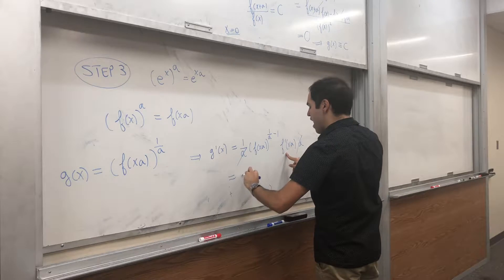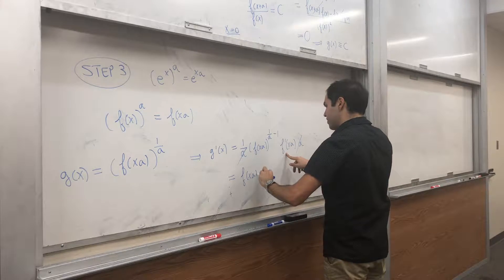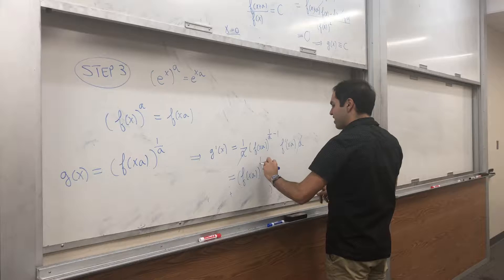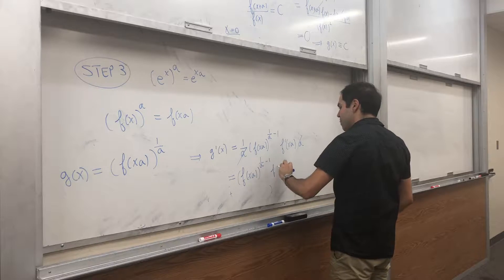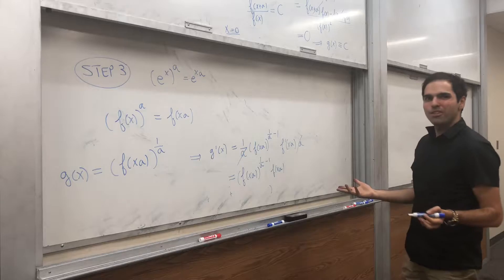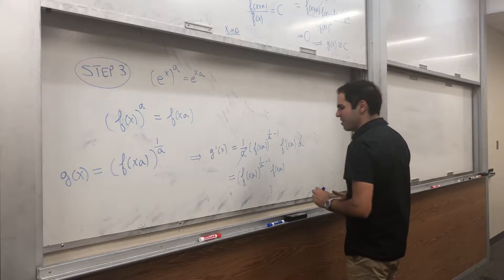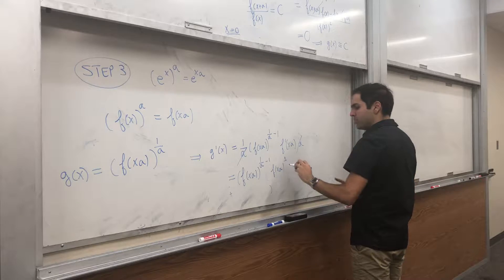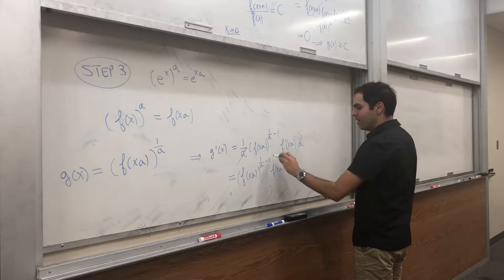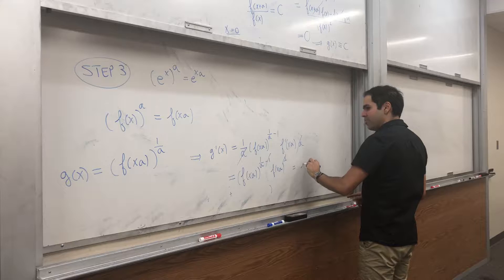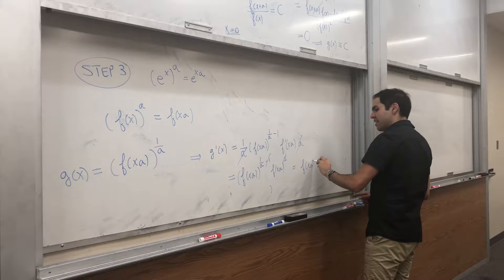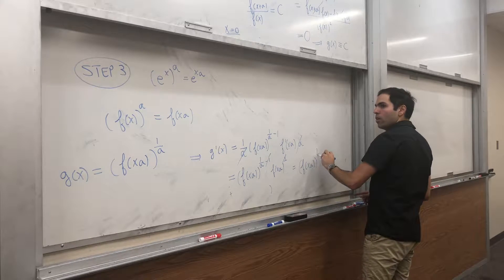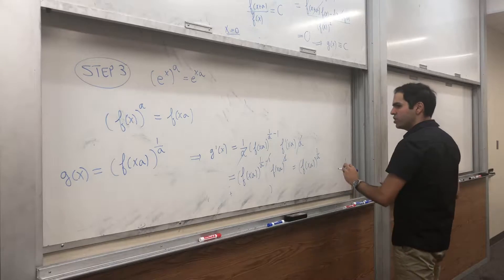And now remember, f prime of x a is just f of x a. Because remember, the main property of exponentials is that f prime equals to f. f of x a to the one over a, and then if you add that up, so it's f of x a to the one over a, which is just g of x.